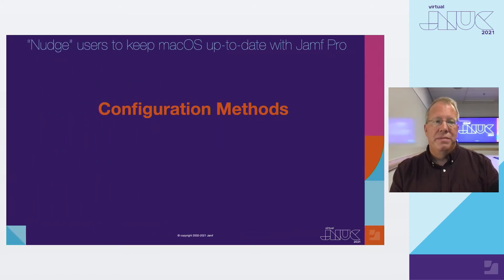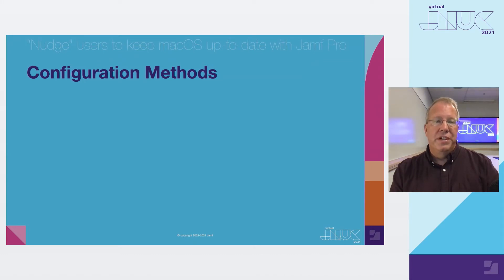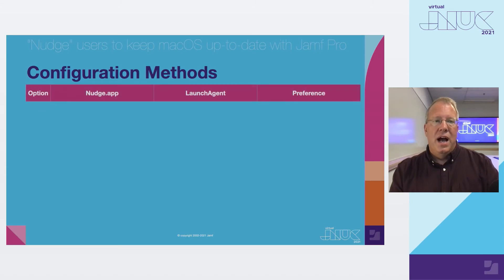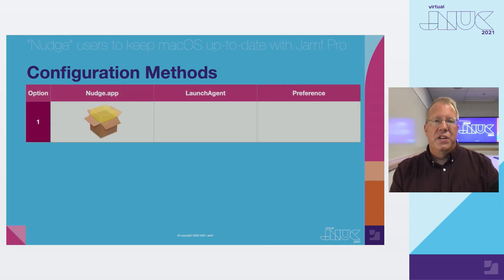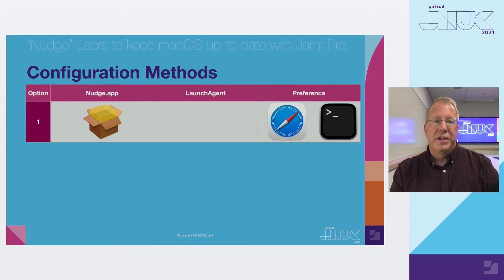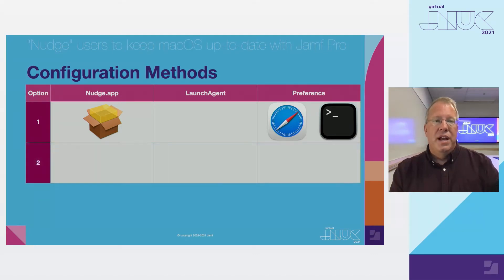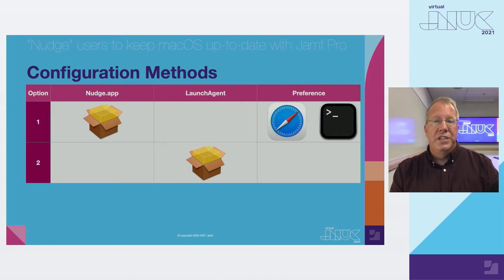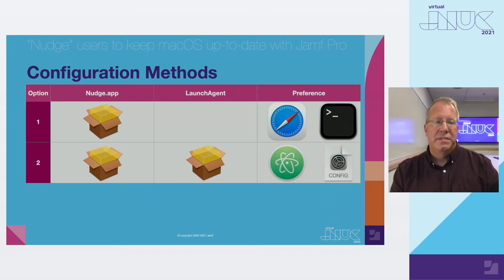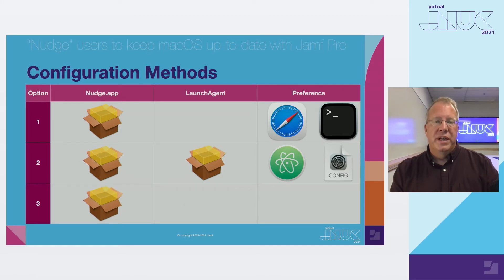Here are three possible configuration methods. Option one is when you are first testing Nudge: you'll install the latest Nudge app, review the Nudge readme and getting started pages, and use Terminal to modify Nudge's configuration. When you're satisfied with your configuration on your local test Mac, it's time to deploy to your testing group. Every release of Nudge includes an optional launch agent package — option two — which will open Nudge every 30 minutes, on the hour and half past the hour. We'll still need to deploy the Nudge app itself, and with this option, a configuration profile is deployed for Nudge's settings. Option three is what we're using: a custom launch agent and local JSON deployed via the Jamf Pro script payload.